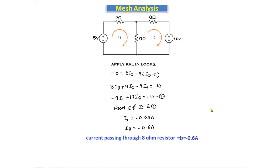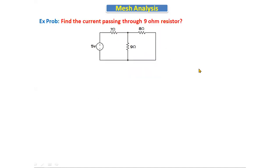Like this we find the current passing through any specific resistor. In exams they will ask for the current through a specific resistor, not all resistors. So far we discussed circuits with two voltage sources. Now we will see how to handle a circuit with only one voltage source.